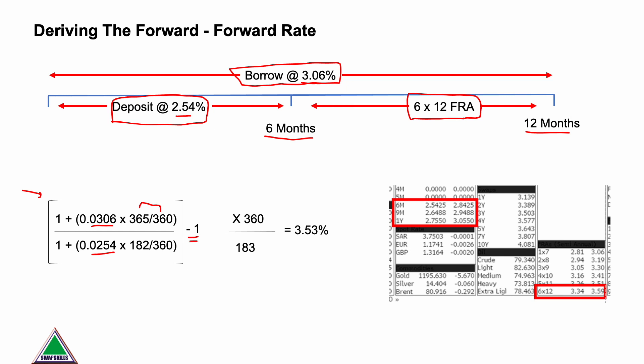We multiply by 360 to gross it up to a full year, and divide by 183 — because the first half of the year has 182 days, so the second six-month period has 183 days. We get 3.53%. What this means is it doesn't matter what you do with your money — whether you hold it for a full year at 3.06% or invest for six months at 2.54% and then another six months at 3.53%, both routes give you the same cash at the end. It's an arbitrage-free number. If you think the rate is too high or too low, you can act on it with an interest rate future or an FRA.